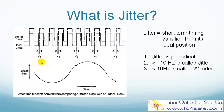The jitter period is the interval between two times of maximum effect or minimum effect. Jitter frequency is the jitter period's inverse. According to ITU-T G.810, jitter frequencies below 10 Hz is called wander, and at and above 10 Hz is called jitter. The bottom figure shows a plot of the relative displacement versus time, which is called the jitter's time function.